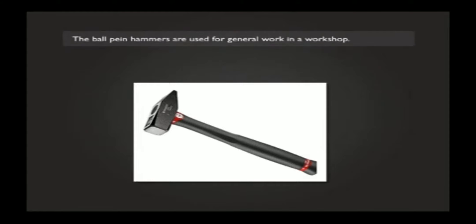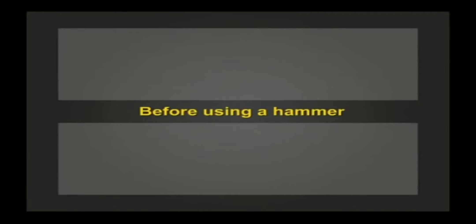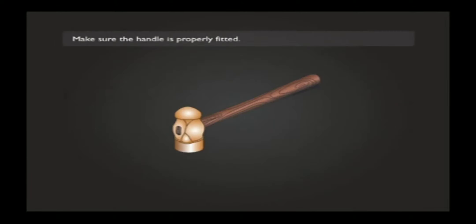The weight of an engineer's hammer used by a welder is 1,000 grams and for marking purposes is 500 grams. The ball peen hammers are used for general work in a workshop. Before using a hammer, make sure the handle is properly fitted.